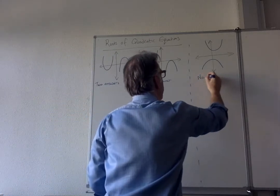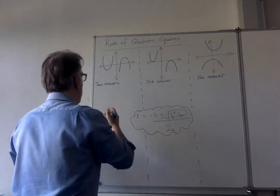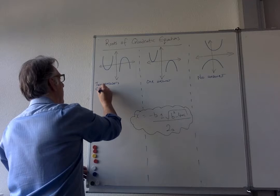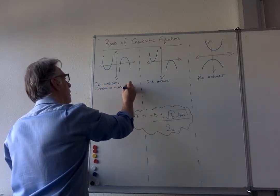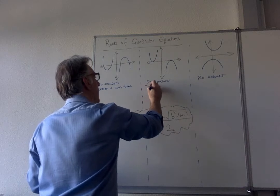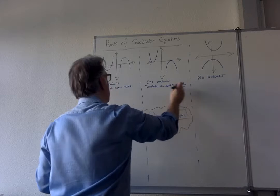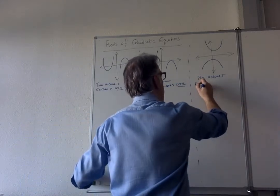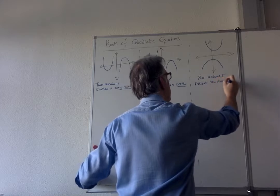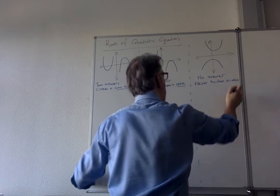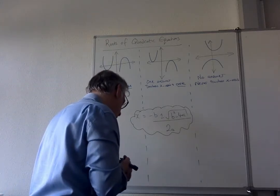And this one, there's no answer because it never touches the x-axis. So, crosses x-axis twice, touches x-axis once, never touches the x-axis. So we've got those three scenarios and you broke those into those groups.